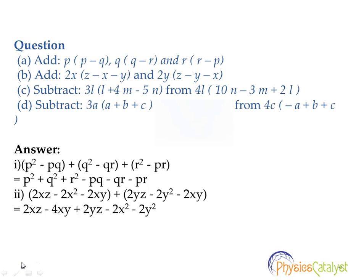Now let's add them. Since it's addition, there is no change in sign, so opening the brackets: p²+q²+r²-pq-qr-pr.